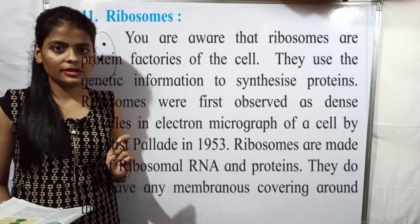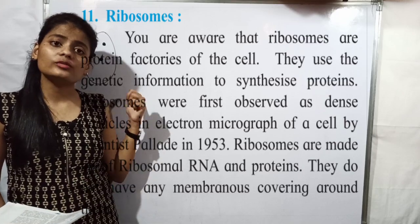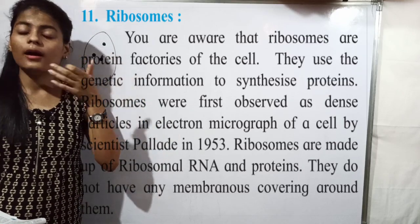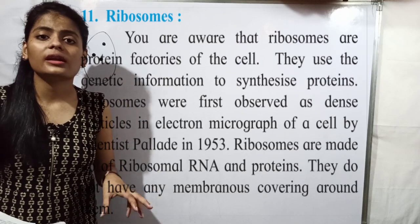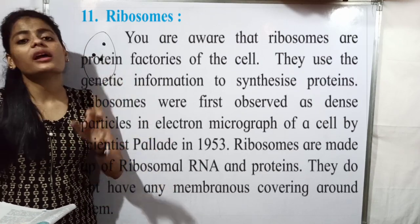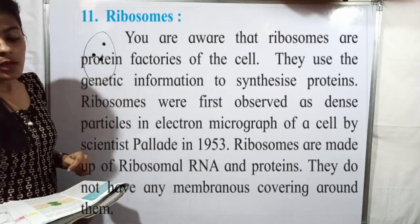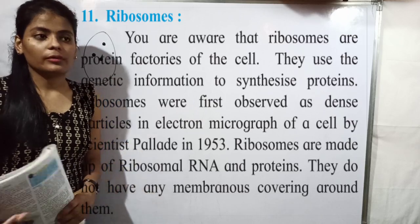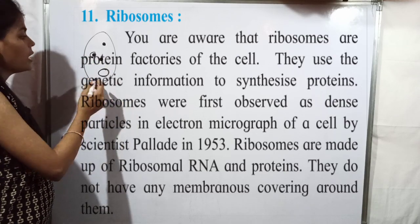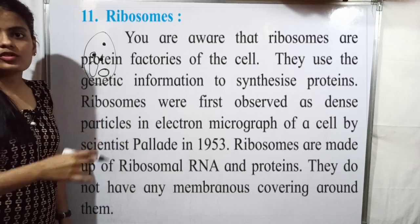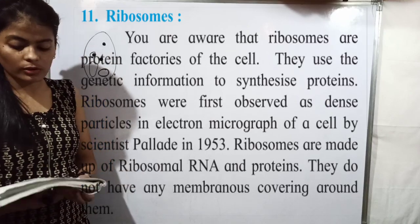Ribosomes are made up of ribosomal RNA (rRNA) and proteins. These structures have been studied and we know that ribosomes are composed of rRNA and different proteins. Importantly, ribosomes do not have any membrane covering around them — they are membrane-less organelles, unlike the nucleus which has a nuclear envelope, or the vacuole which has a tonoplast.